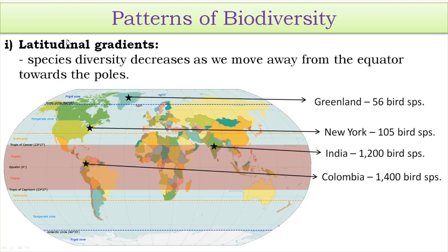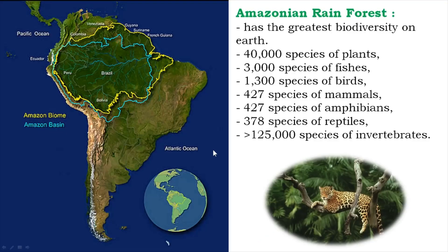When we talk about India, a part of India is located within the tropical zone. Therefore India boasts a very high diversity of bird species — about 1,200 different species of birds are found in India.